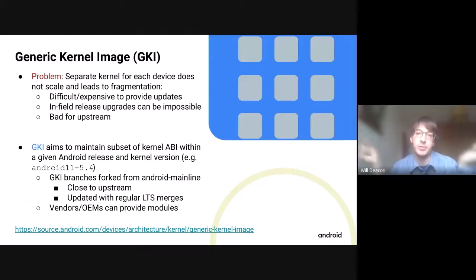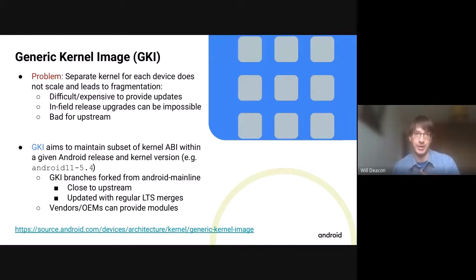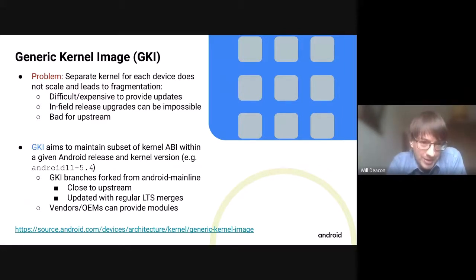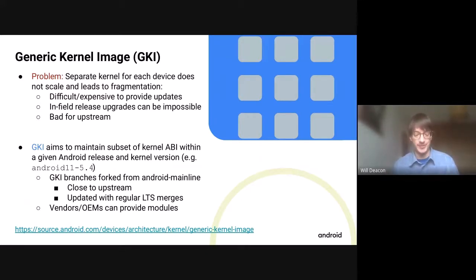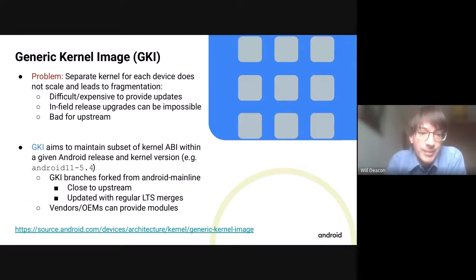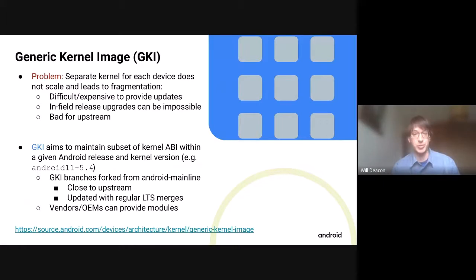The problems associated with that fragmentation include the inability to update those systems, because it's difficult and expensive to deploy a separate kernel update for every single device. It can also make it impossible to upgrade from one Android release to another for a given device, because that new release might require a kernel feature not present on that device. And — a point that doesn't get made quite enough — it's bad for upstream, because the upstream kernel's job is to have the right subsystems and abstractions to support all these different devices. You can't do that unless you have visibility into all the different problems and hardware, and because it's all squirreled away in different kernels, it's very hard to come up with an abstraction that works for everybody.